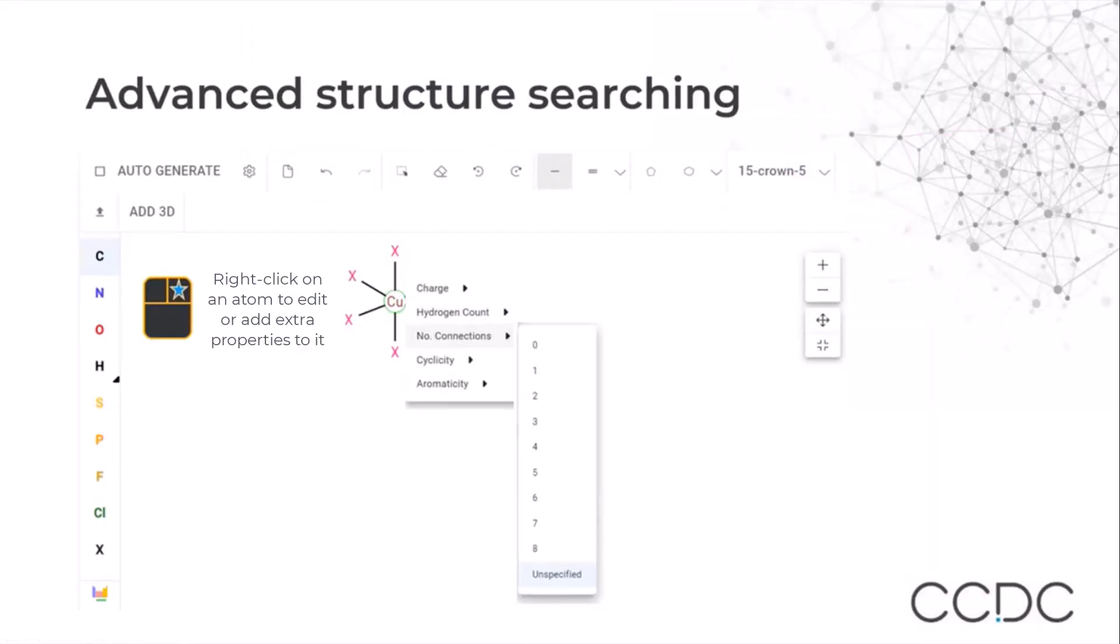Taking a step back to see some of the advanced structure searching functionality in the sketcher, if we right click, we can add atom properties. What we can do, for example, is to define the charge, the hydrogen count, the number of connections, the cyclicity, or the aromaticity.